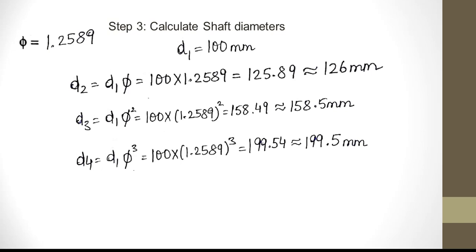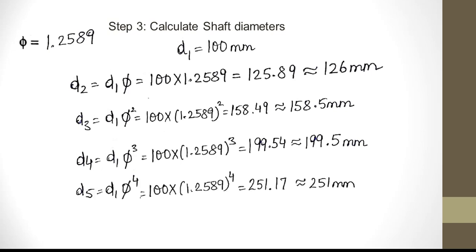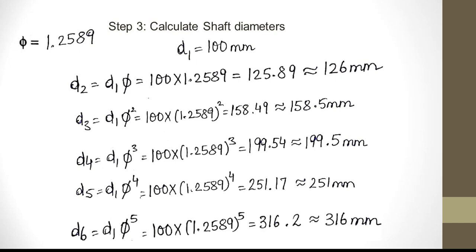D4 is D1 × phi cubed: 100 × 1.2589 cubed turns out to be 199.54, which we round off to 199.5 mm. D5 is D1 × phi raised to 4: 100 × 1.2589 raised to 4 gives 251.17, which we round off to 251 mm.